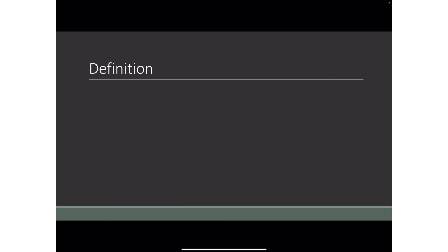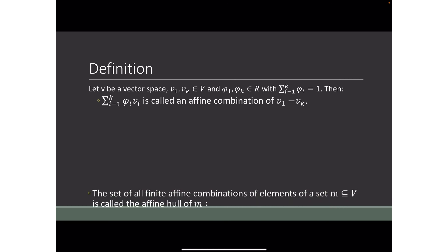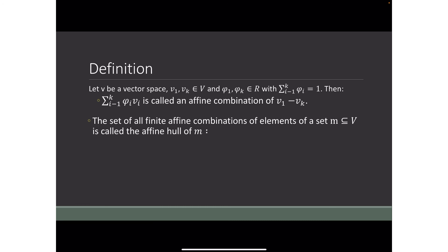Hence we define an affine combination as follows. Let V be a vector space, v₁ through vₖ elements of V, and φ₁ through φₖ real numbers with the summation of φᵢ from i equals 1 to k equal to 1. Then the summation of φᵢvᵢ from i equals 1 to k is called an affine combination of v₁ through vₖ. The set of all finite affine combinations of elements of a set M in V is called the affine hull of M.